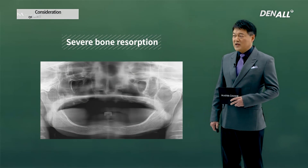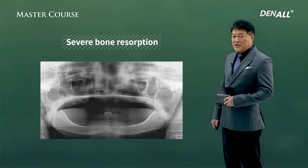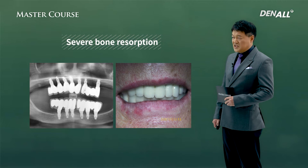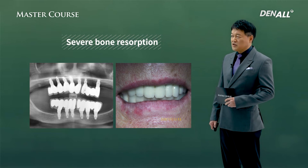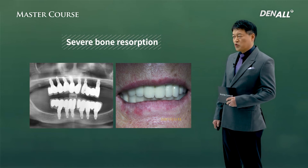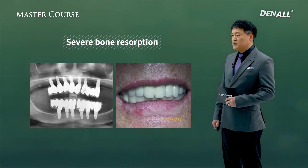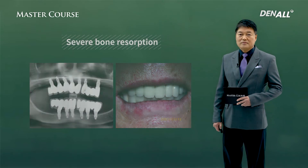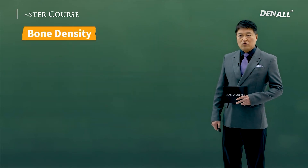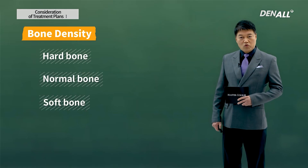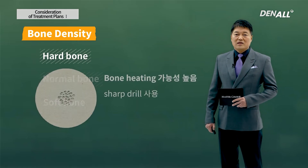A patient who had been wearing a denture for a very long time had very severe bone resorption. The patient really wanted implant surgery, so I overcame many obstacles, but there were many difficulties regarding prosthetic treatment as well. If the patient does not have a lot of bone, we need to pay more attention. Bone types include hard bone, normal bone, and soft bone.